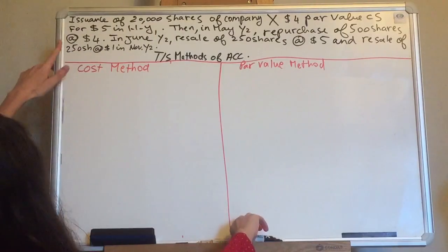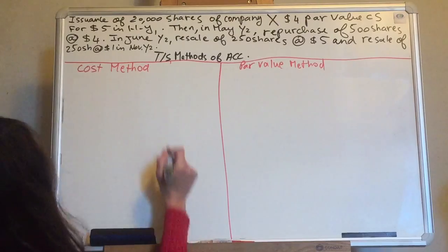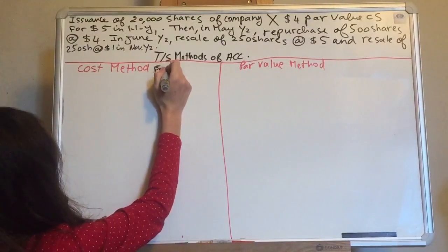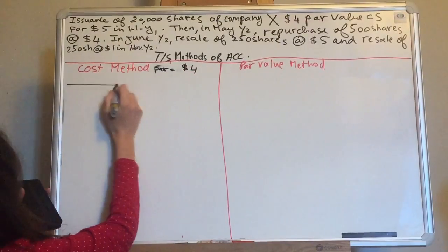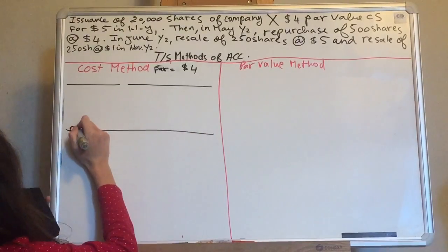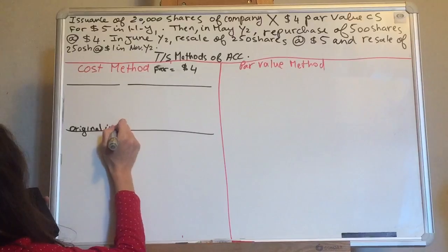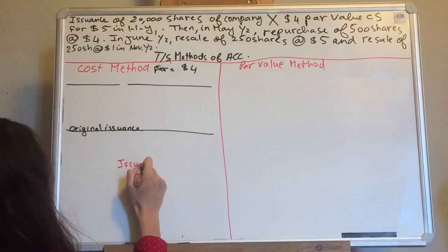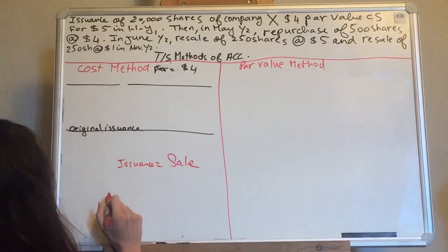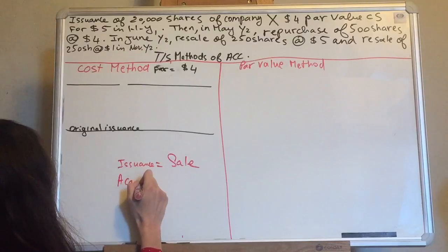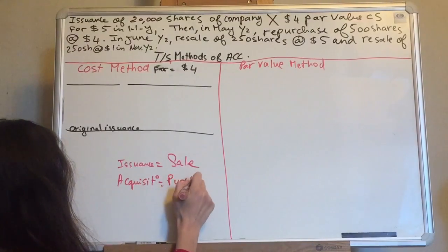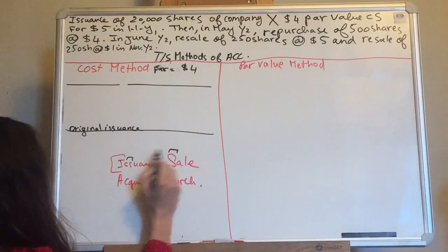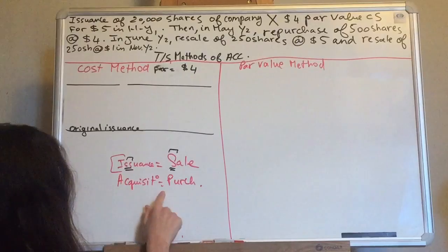First, let's start with the following. When you see issuance, you have to keep in mind that issuance equals sales. And acquisition — acquired, acquisition — equals purchase. There's no difference. When you see issuance, that means sale. And acquisition means purchase. You have to know this and keep that in mind.